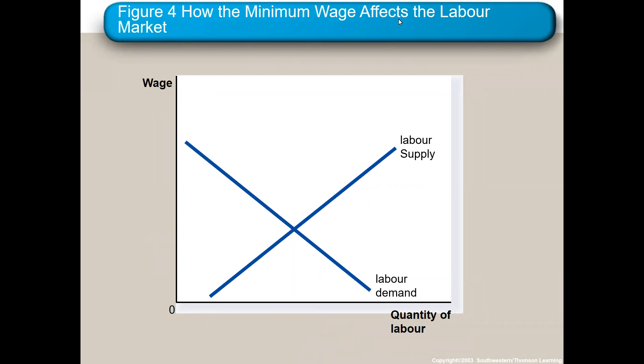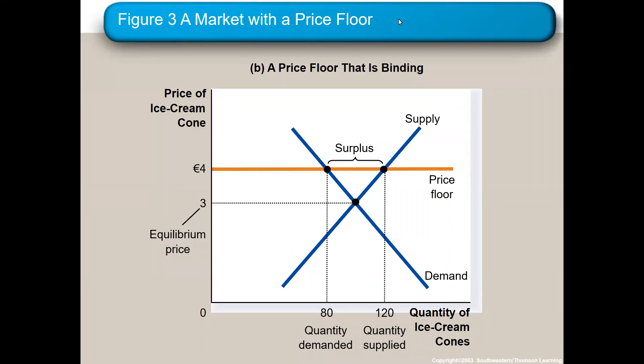Quick review: price floors, to be binding, have to be above the equilibrium. They increase the price, increase quantity supplied, decrease quantity demanded, leave a surplus, and result in fewer units sold. Price ceilings have to be below the equilibrium. They result in suppliers supplying less, they leave shortages, and a lot of times — like with gas — they'll have long lines.